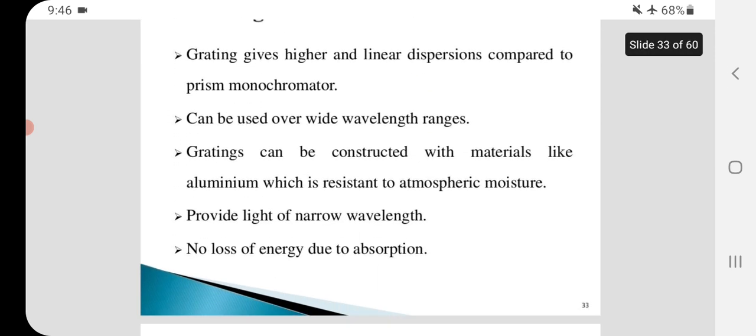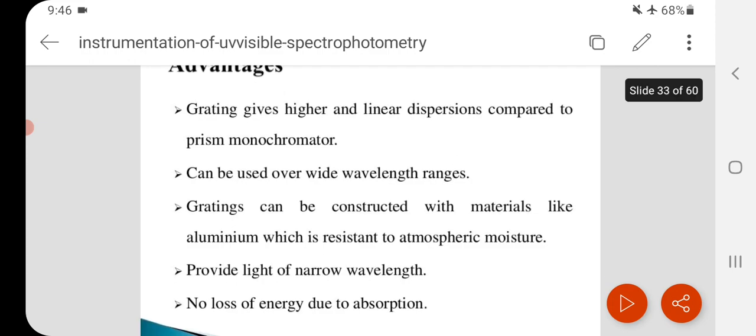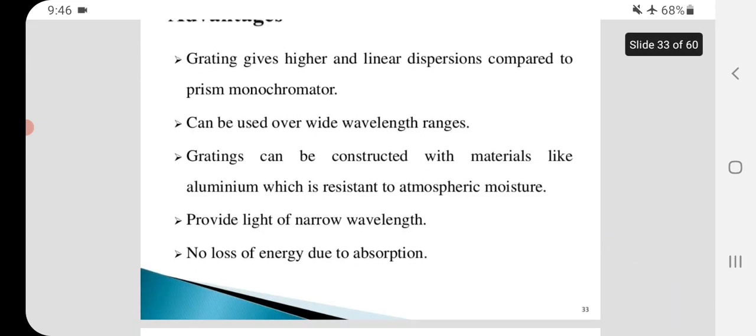Advantages: Grating gives higher and linear dispersions compared to prism monochromator. Can be used over wide wavelength ranges. Gratings can be constructed with materials like aluminum which is resistant to atmospheric moisture. Provide light of narrow wavelength. No loss of energy due to absorption.